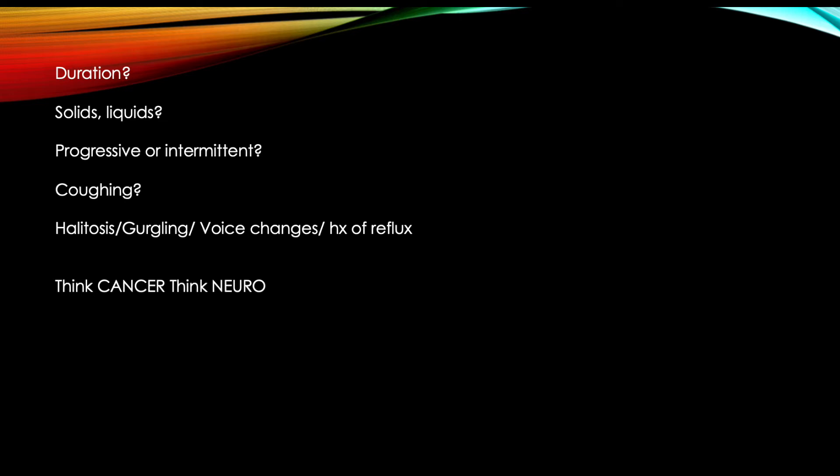The next thing to establish in the history is the duration. Are we talking years, months, or weeks? If the patient has a food bolus stuck, they'll give a very acute history tied to a specific meal. Cancer tends to present over days to weeks, occasionally months. Chronic motility issues tend to go on for months to years.